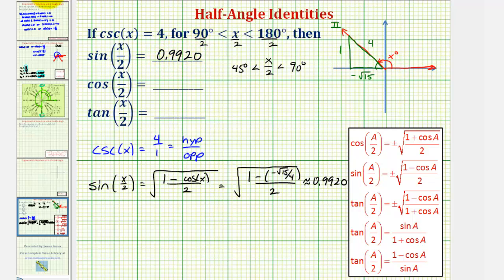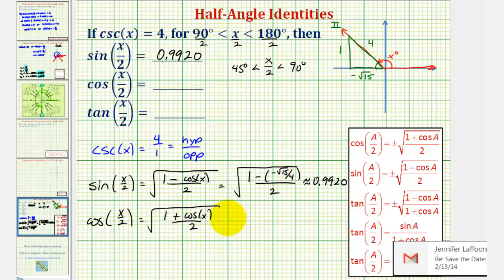And now we can easily find the cosine function value, or cosine of x divided by two. This would be equal to the square root of one plus cosine x divided by two. So we just have a difference in the sign here.